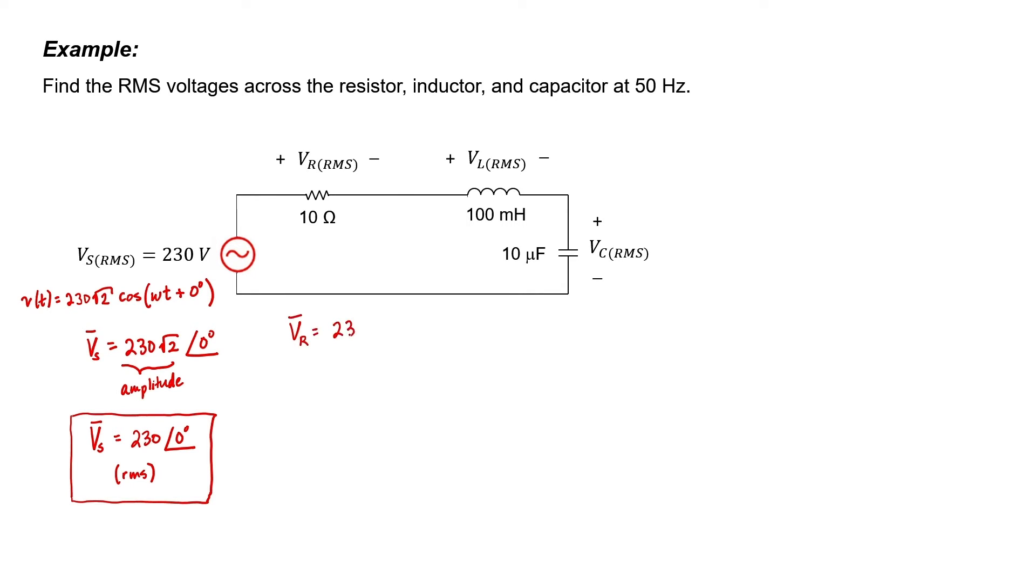I'm going to use voltage division to find the RMS voltages across the resistor, the inductor, and the capacitor. I'm using ZL and ZC to represent the impedances of the inductor and the capacitor, respectively.